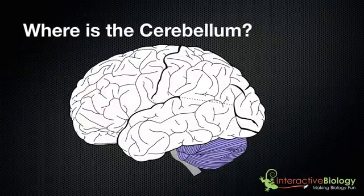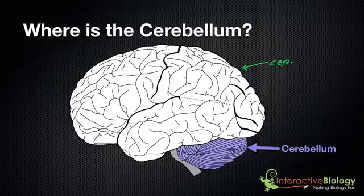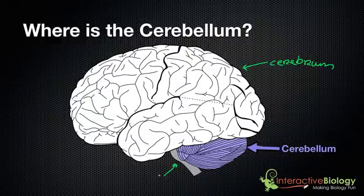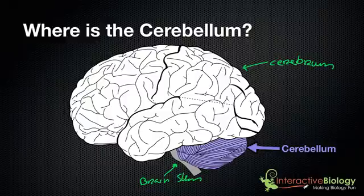Where is the cerebellum? Well, the cerebellum is right here. In the last video, we spoke about the cerebrum — and this is the cerebrum here. And in one of the future videos, we're going to talk about this part here — that's the brain stem. So when we're talking about the cerebellum, we're talking about this portion here, kind of at the bottom and to the back of the brain, tucked away right here. So that is where the cerebellum is.